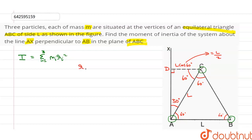Perpendicular distance of mass A from line AX is 0 because it is in contact with line AX. Mass B is L units away from line AX, and mass C is L by 2 units away from line AX.